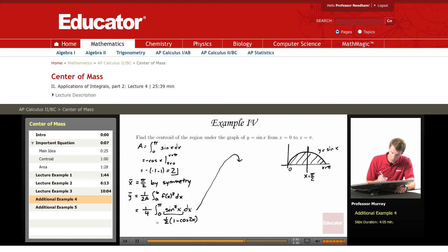So if I pull that 1 half out and combine it with the 1 fourth, I'll get 1 eighth. And then if I integrate 1, I get x. Integral cosine of 2x is 1 half sine of 2x. And I'm evaluating this from x equals 0 to x equals pi.